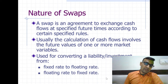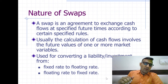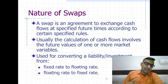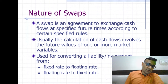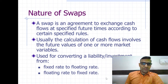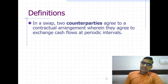The essential utility of swap contracts is converting your liability or investment into a particular form. Suppose you have a fixed rate liability — you can convert it into a floating rate liability with the help of swap contracts. Similarly, you can convert a floating rate liability into a fixed rate liability. By definition, it involves two counterparties who agree on certain contractual arrangements.